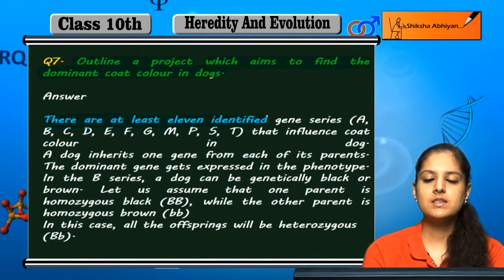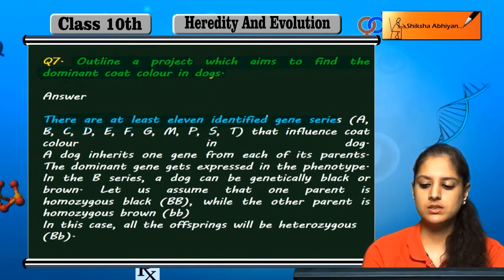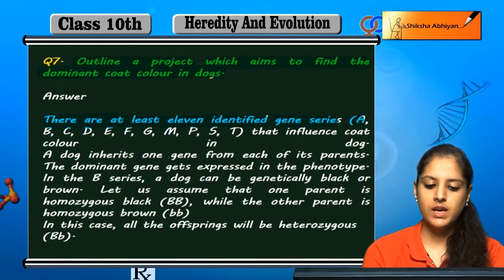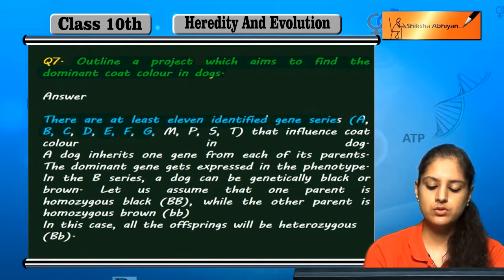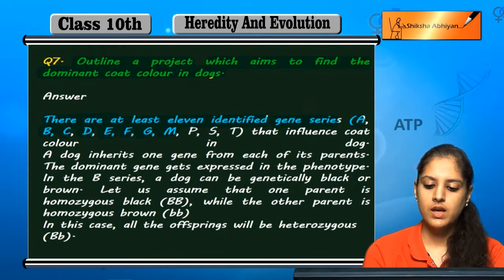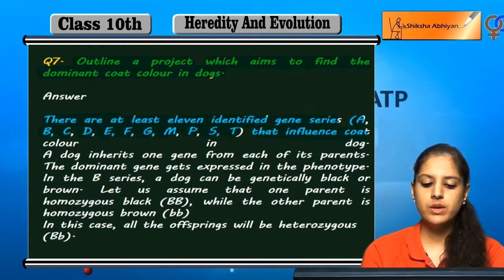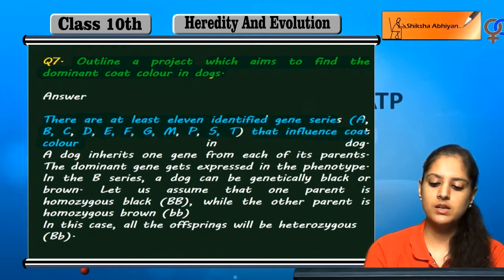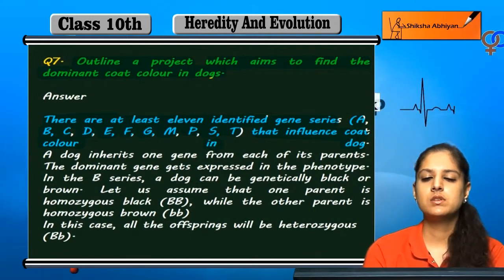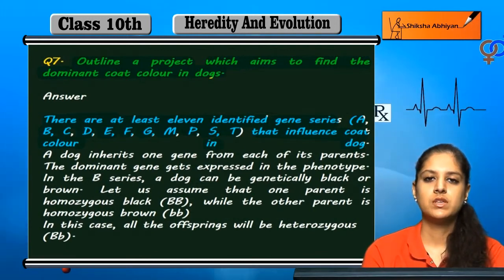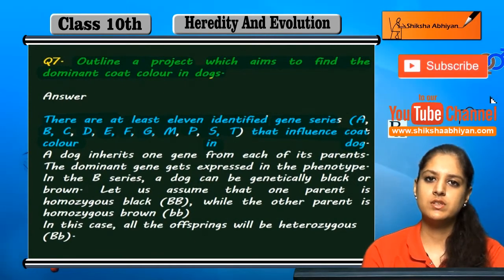There are at least 11 gene series identified in dogs: A, B, C, D, E, F, G, M, P, S, and T — that influence coat color in dogs.